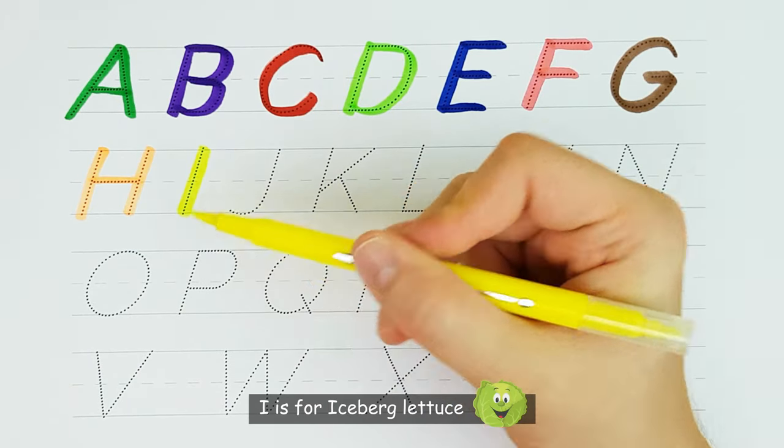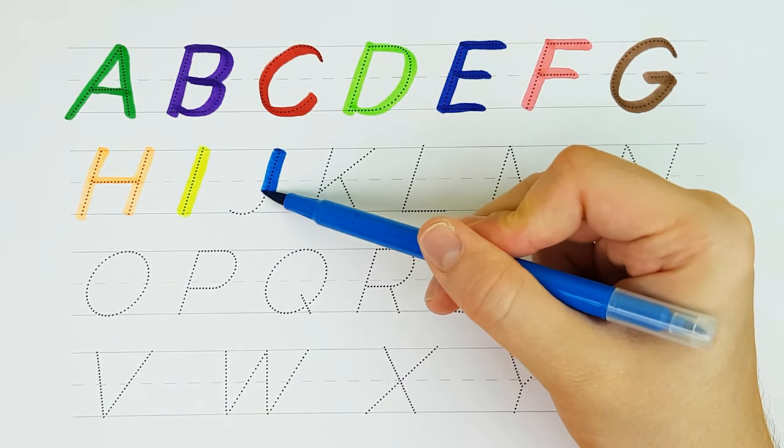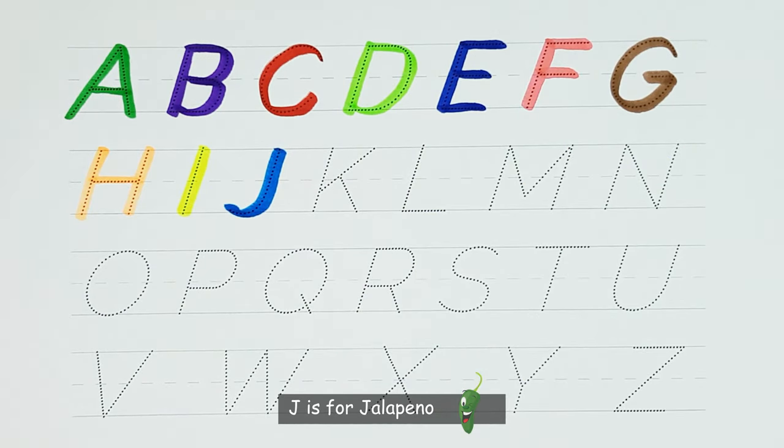I. I is for iceberg lettuce. J. J is for jalapeno.